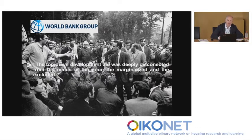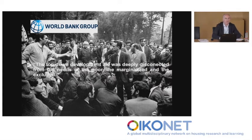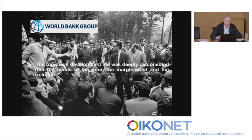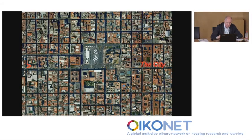If we consult global players like the World Bank Group and the United Nations, we see that community participation — specifically in a World Bank document entitled 'Why Does Community Participation Matter?' — comes down to the efficiency of programs and aid provided for redevelopment. The problem was that top-down development aid was deeply disconnected from the needs of the poor, the marginalized, and the excluded.